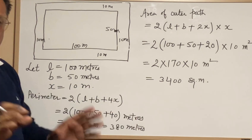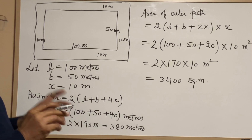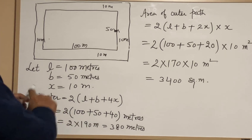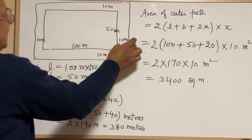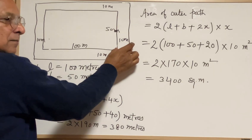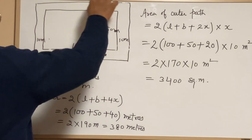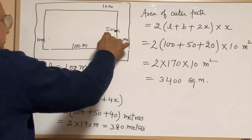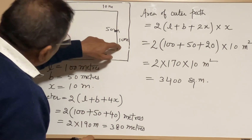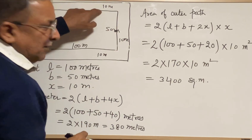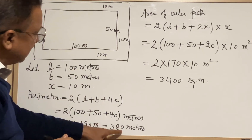For verification, we have a very simple idea. Taking the outer length: 100 plus 10 plus 10 equals 120. And the outer breadth: 50 plus 10 plus 10 equals 70. So 120 plus 70 is 190, and double of 190 is 380 meters — confirming our result.